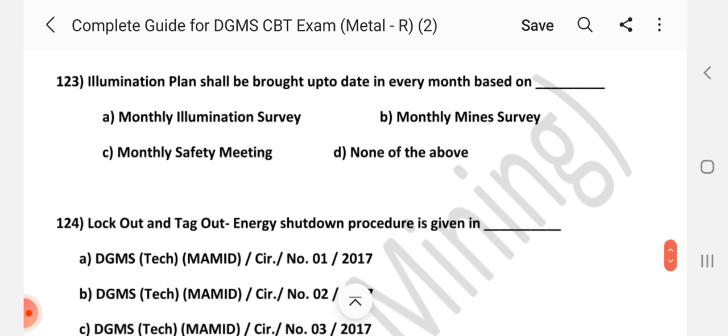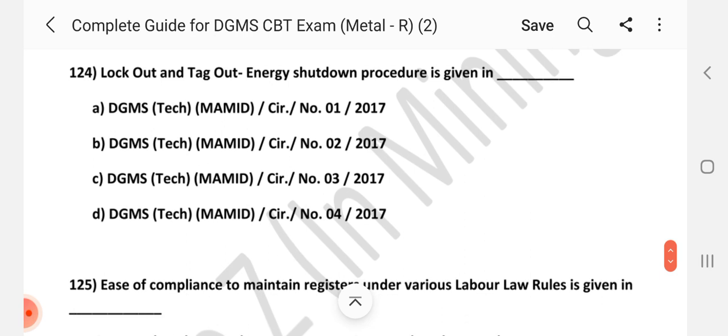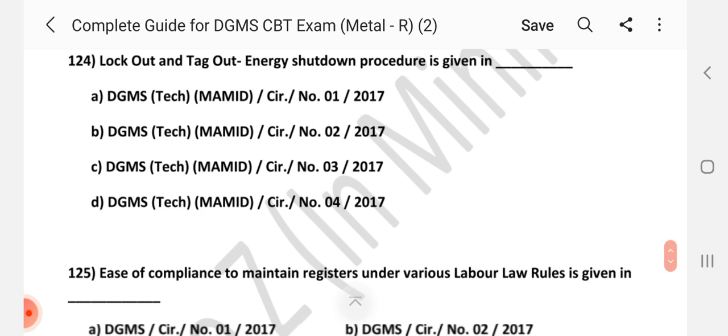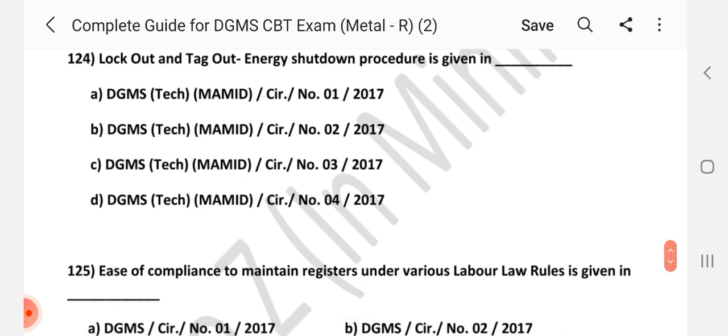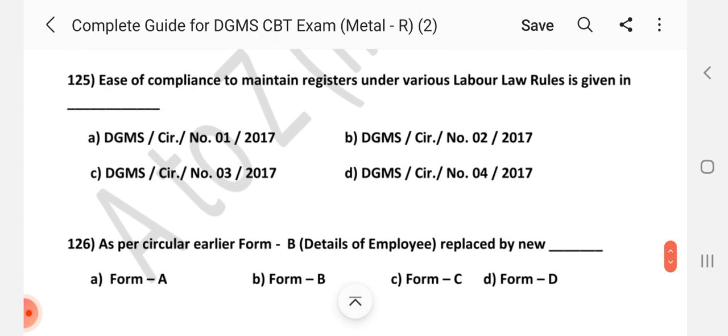Question number 122. Illumination Plan signed by dash and countersigned by dash. Answer is D, Signed by surveyor and countersigned by manager. Question number 123. Illumination Plan shall brought up to date in every month based on dash. Answer is A, Monthly Illumination Survey. Question number 124. Lockout and tagout energy shutdown procedure is given in dash. Answer is B, DGMS Tech Circular number 2.